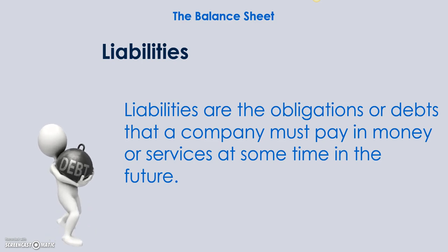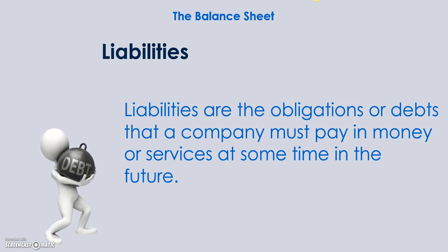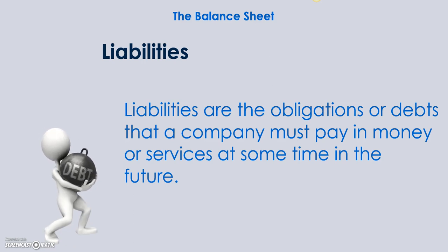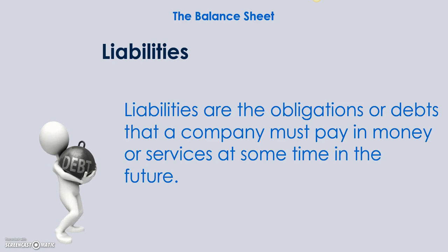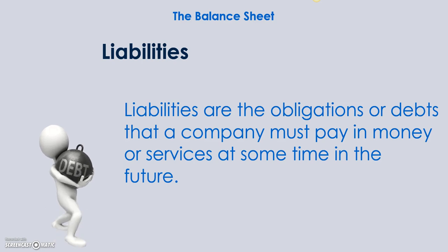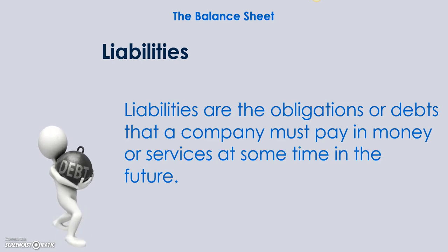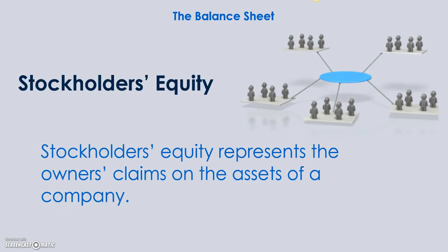Liabilities are a bit easier to understand — they are obligations or debts that a company must pay at some point in the future. They come in a couple of different forms. There are short-term liabilities, like accounts payable, which is the opposite of accounts receivable. Accounts payable typically encompasses short-term amounts due in the next couple of weeks, like rent or a lease payment. Then there are longer-term liabilities, like a note payable with a bank or a mortgage note.